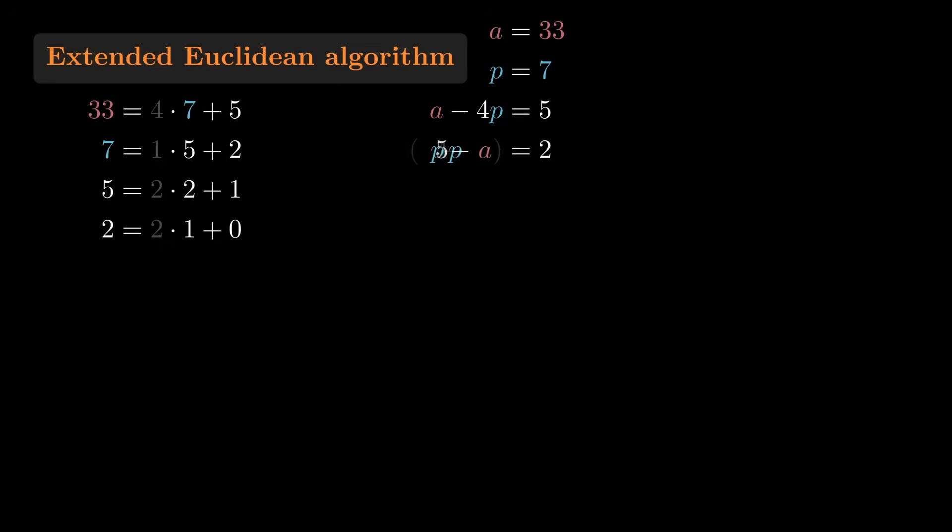Now in the third equation, 2 is 5P minus A, and from the first equation, 5 is still A minus 4P. Rearranging, and then simplifying, we get that 3A minus 14P equals 1.